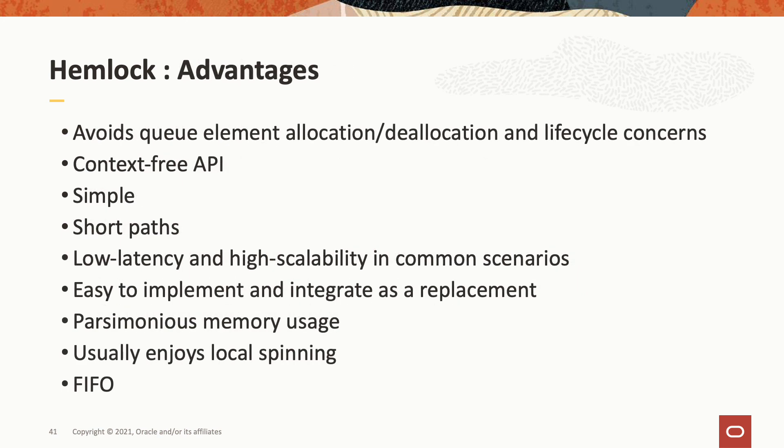We'll now switch to the advantages enjoyed by Hemlock. Hemlock avoids queue elements and therefore queue element allocation, deallocation, and lifecycle concerns. The API for Hemlock is context-free — we don't need to pass any information from the lock operation to the corresponding unlock. Hemlock is simple with extremely short paths. It has low latency and high scalability in common scenarios. It's easy to implement and integrate as a replacement for other locks. It has extremely parsimonious memory usage. It usually enjoys local spinning absent multi-waiting. And, like MCS and CLH, it's FIFO.